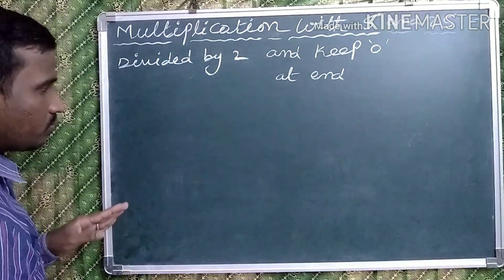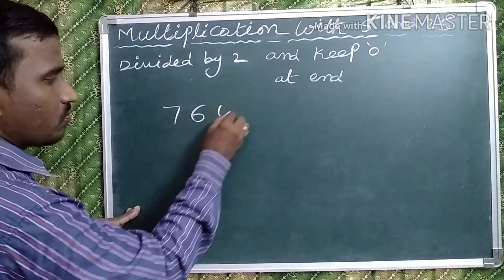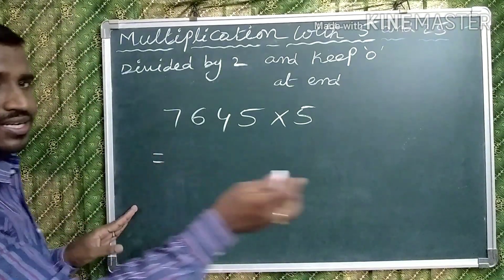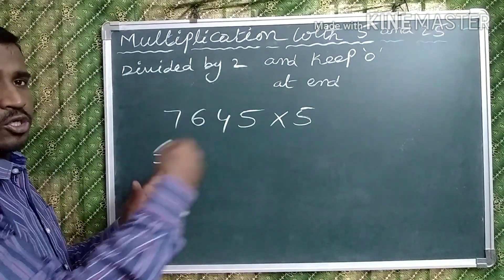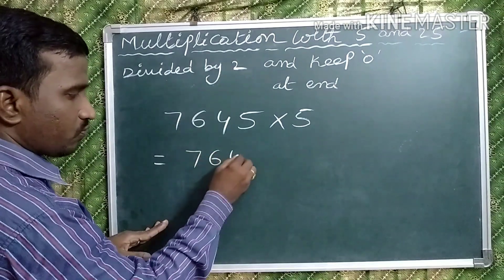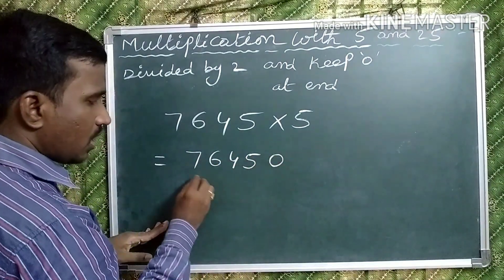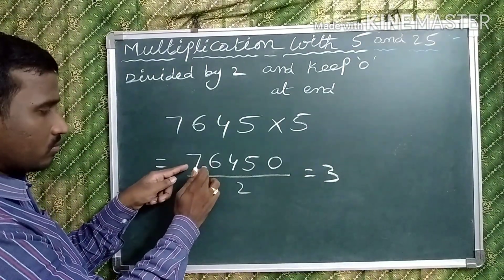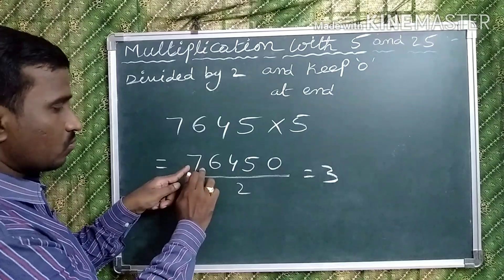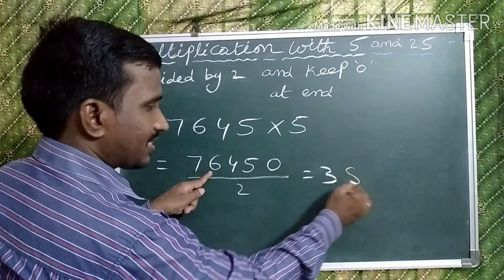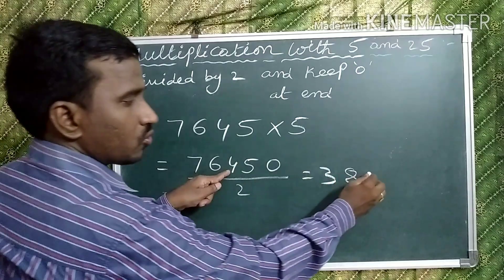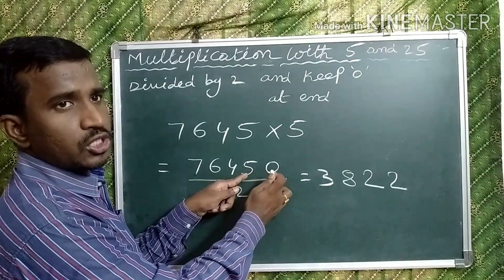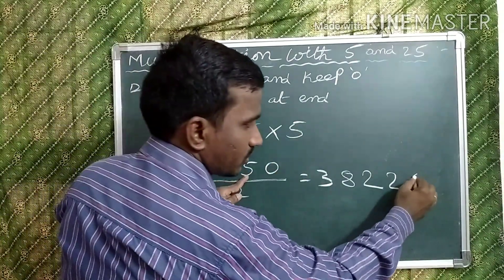Observe one more example: 7645 multiplied by 5. In the shortcut method, keep 0 at the end — 76450 — and divide by 2. 3 twos are 6; carry 1, then 16; 8 twos are 16; 2 twos are 4; again 2 twos are 4; carry 1, then 10; 5 twos are 10. Answer: 38225.